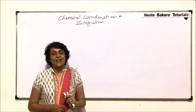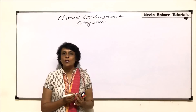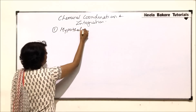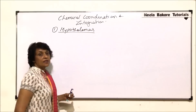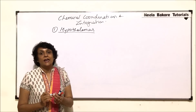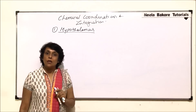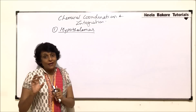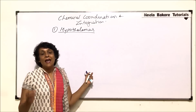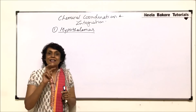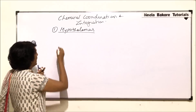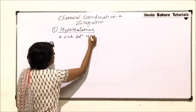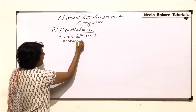We will take up all these glands individually and we are starting with the first structure, the hypothalamus. Hypothalamus is a part of the nervous system but it releases hormones known as neurohormones. It secretes hormones which regulate other endocrine glands, and that is why hypothalamus is considered as a link between the nervous system and the endocrine system.